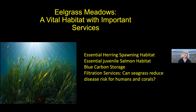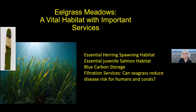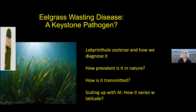I'm going to switch gears and talk about the work we're doing in eelgrass meadows. I like to talk about this not just because it's so ecologically important, but as a disease ecology project it's much more satisfying than the sea star wasting one — because we have an identified infectious agent and can do really solid science. The pathogen is called Labyrinthula zosterae, and I'll tell you how we know that and how prevalent it is in nature.